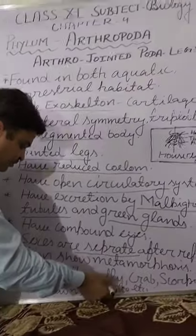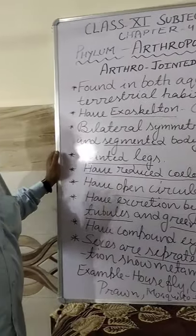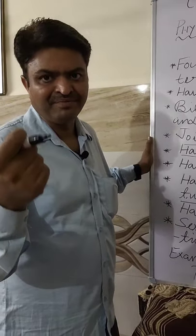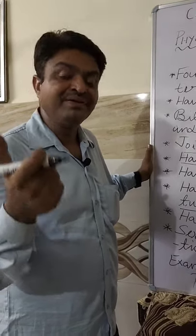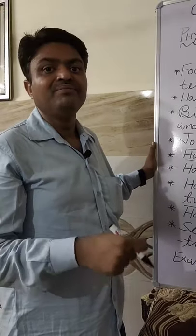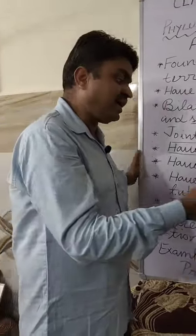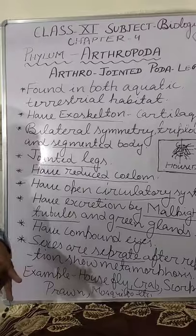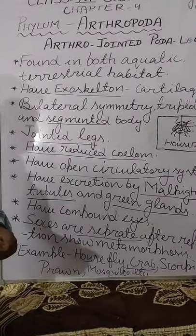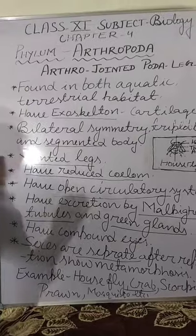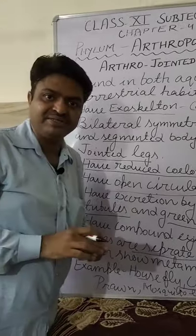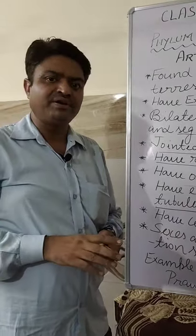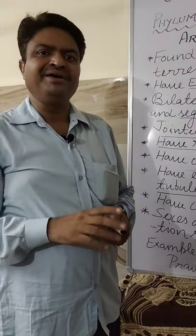Now we come to the examples. All the insects are examples — house fly, scorpion, mosquito, crab, and prawn. Crab and prawn are found in sea water or marine water. All the insects come in the category of Arthropoda. Today we have discussed two important phyla: first is Annelida, second is Arthropoda. Now you will try to cover these phyla. Thank you very much and have a nice day.